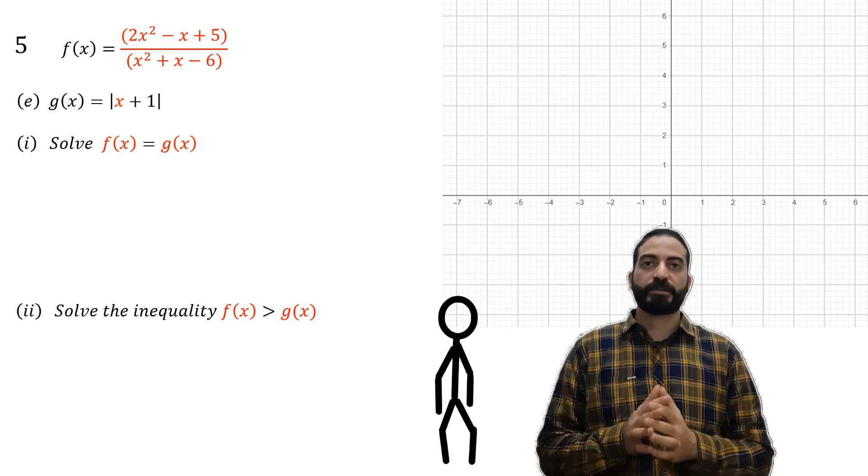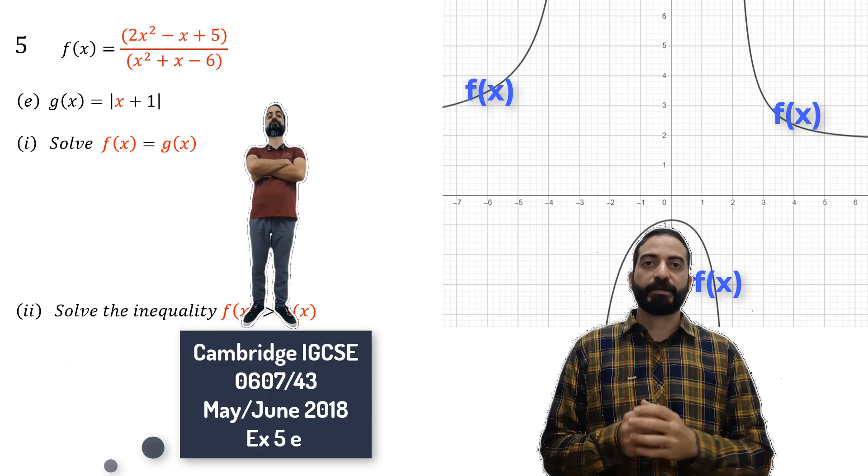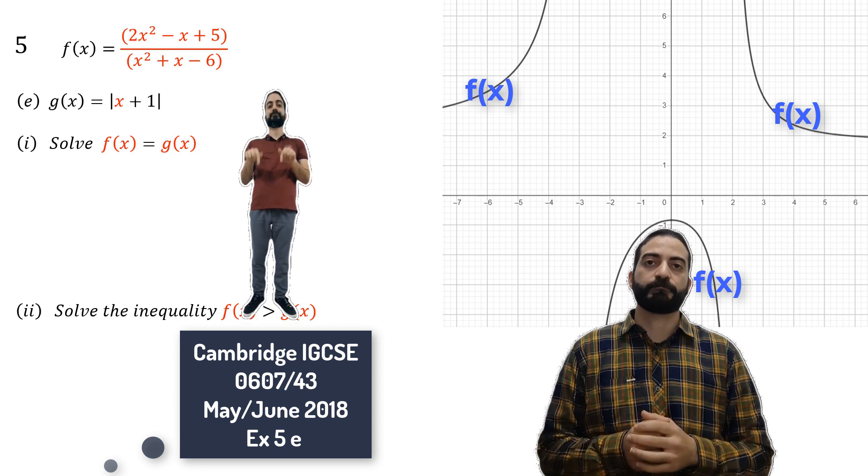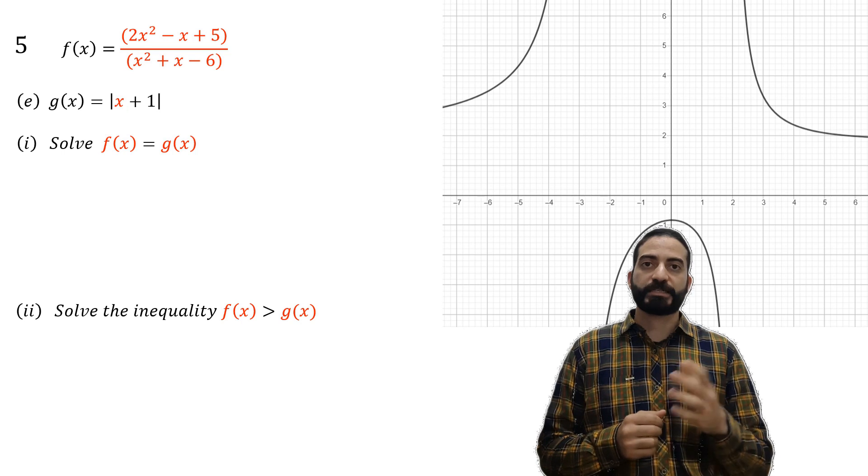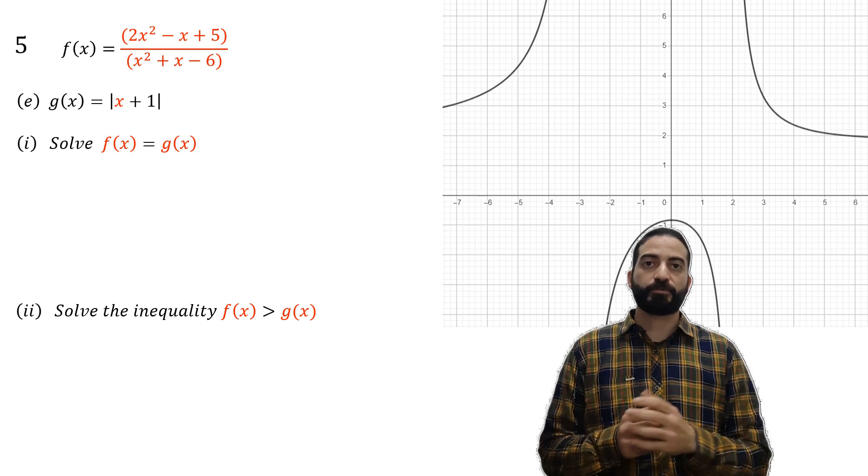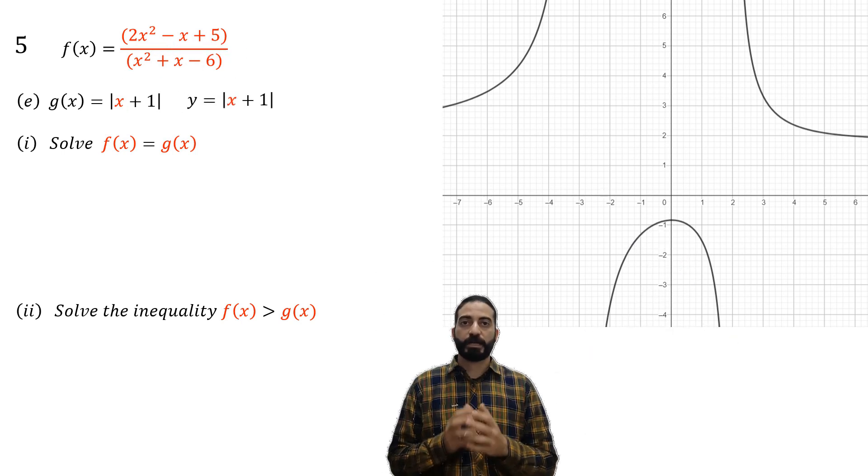Hello everyone, we'll start by solving question 5 part e of the Cambridge IGCSE 2018 exam. Solve f(x) = g(x), where g(x) equals the absolute value of x plus one. When we have absolute value, we can remove it but we write plus and minus.